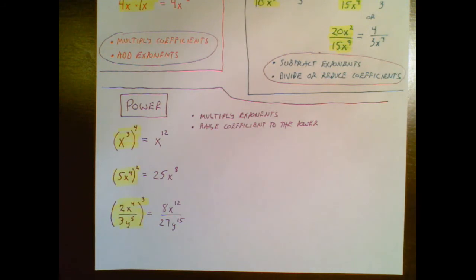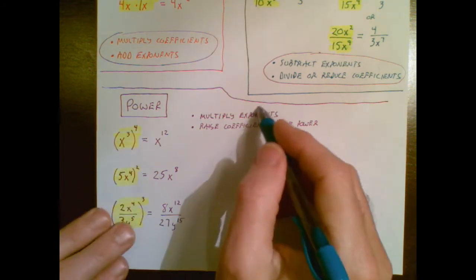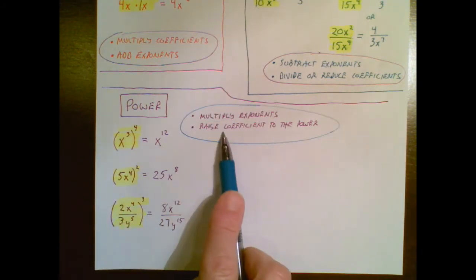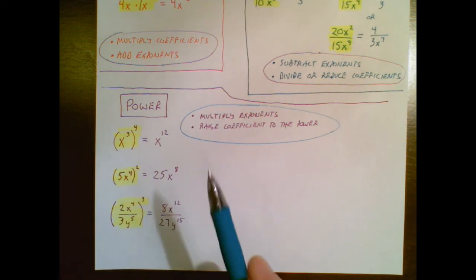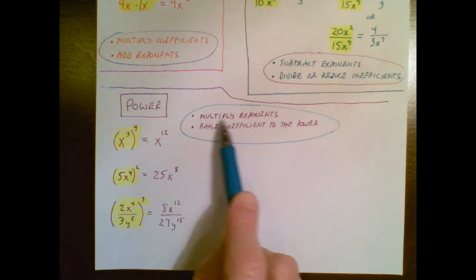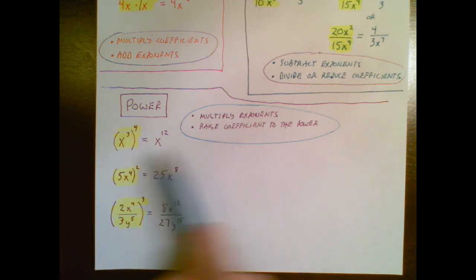Okay the third rule we're going to look at is a power situation or in other words we're going to raise an exponent to another exponent. If you're making a summary sheet for yourself that these are the two bullet points that apply to this situation. When I have an exponent raised to another exponent I'll multiply the exponents and I'll raise the coefficient to that power.